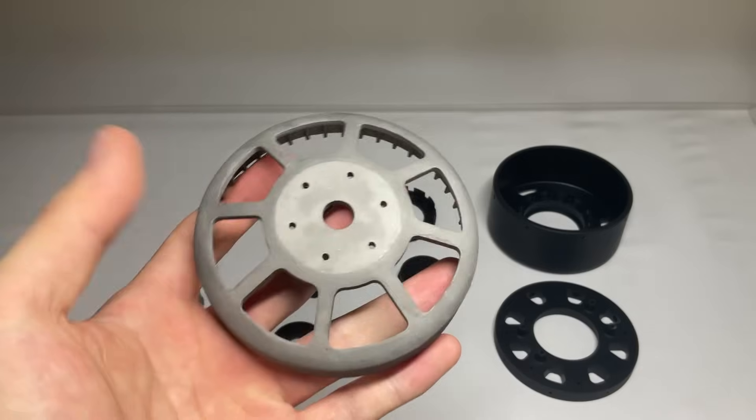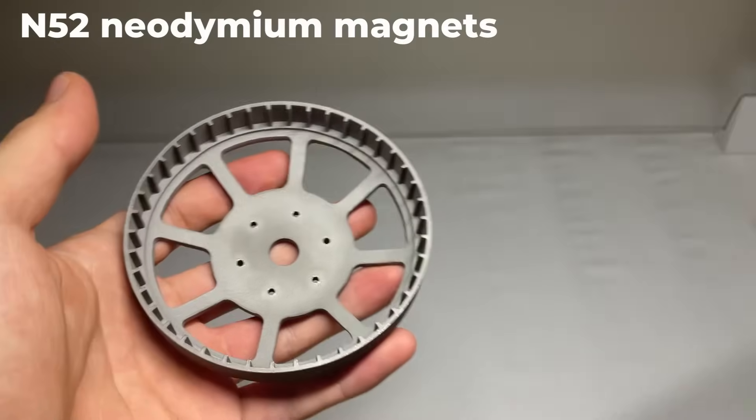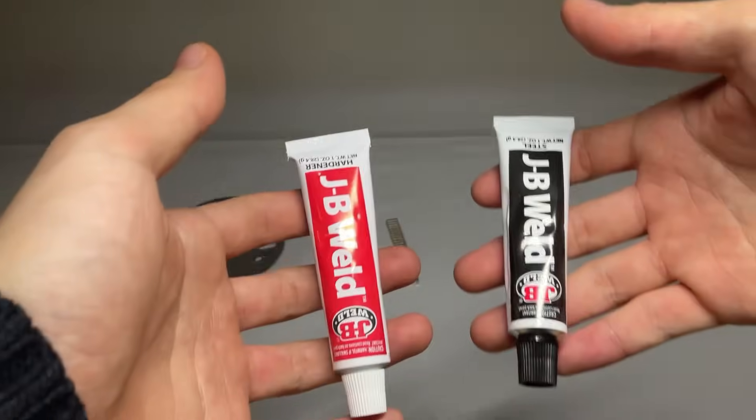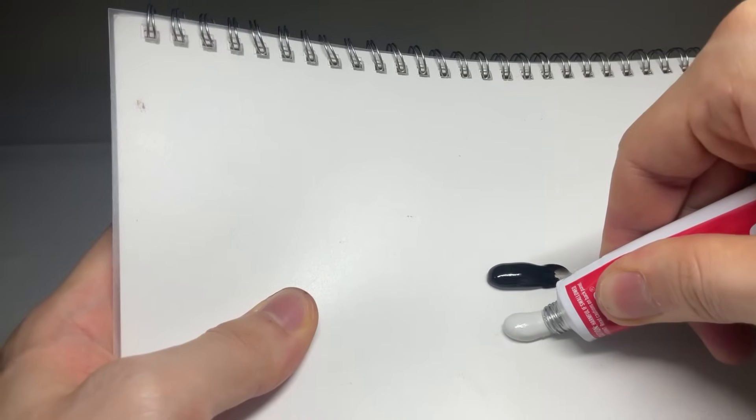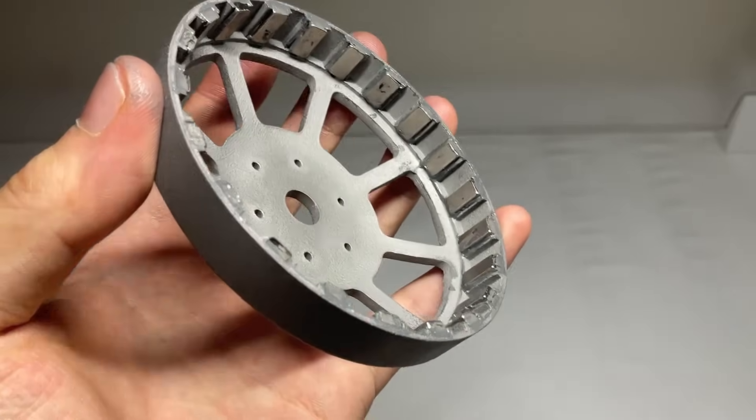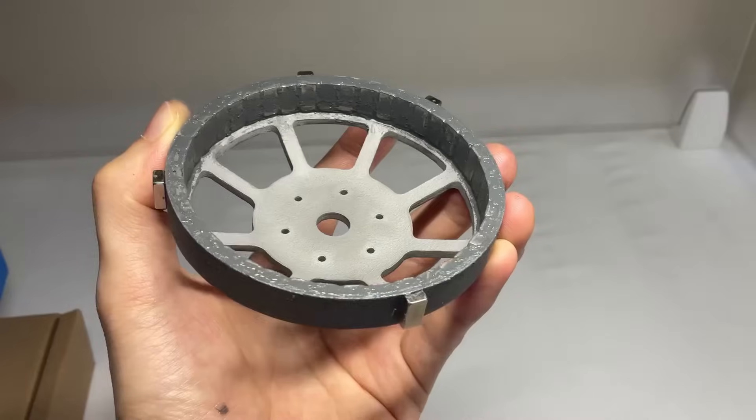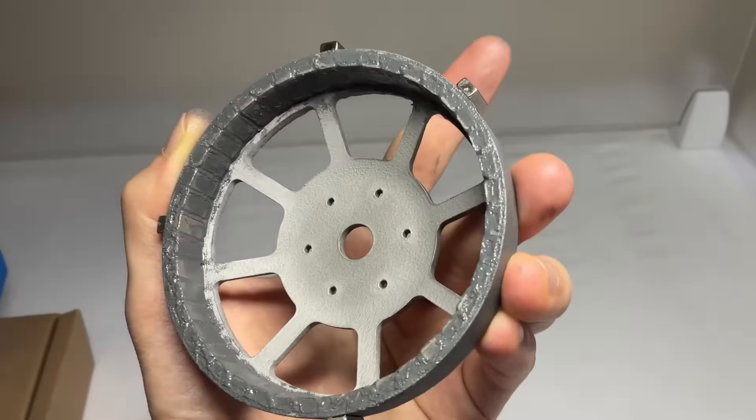Now, let's assemble the actuator. First, I'll attach the magnets onto the rotor using an adhesive. I'll make sure each magnet is placed so that the polarity alternates one after the other. With that, my 42-pole rotor is complete.